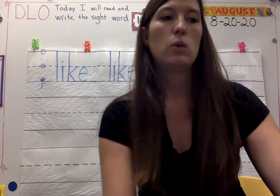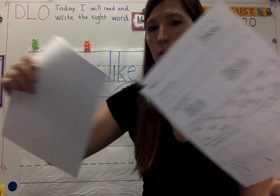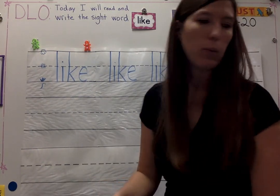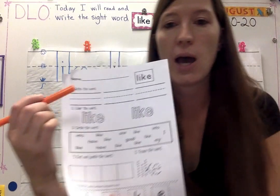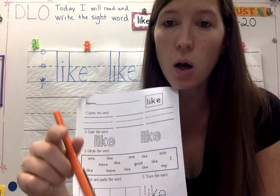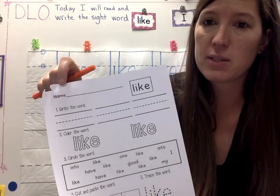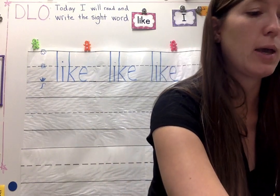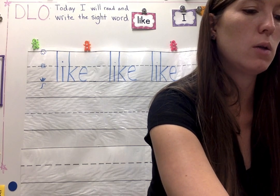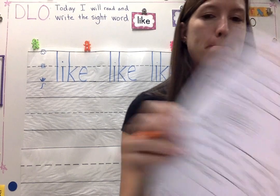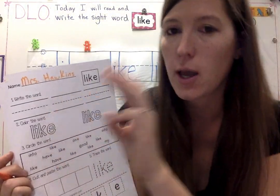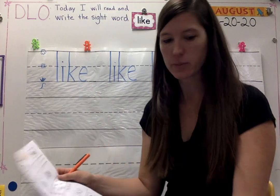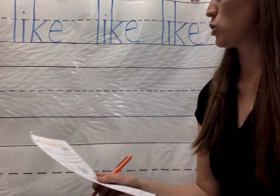When you're done with that, you will get your sight word packet and tear 'like' off. I'm going to use the highlighter on this so you can see it, but you at home will use your pencil. At the top it says name — you need to write your name. It says write the word — how many times are you going to write it? One, two, three times. I'm going to scoot this up a little closer so you can see it better.